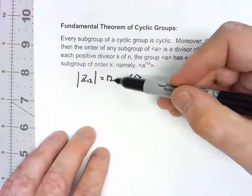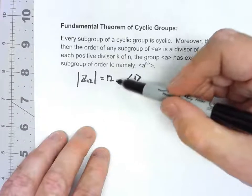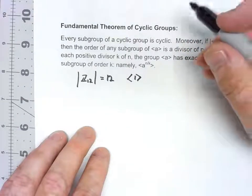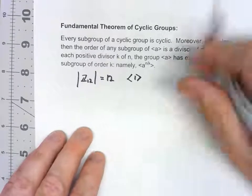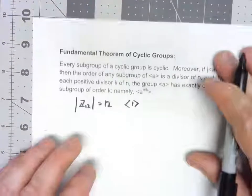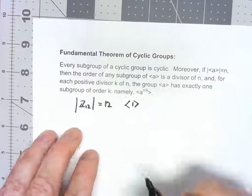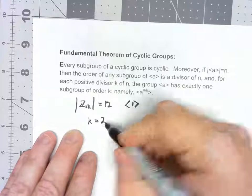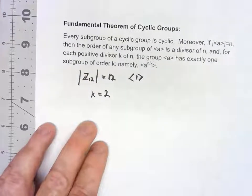So what that says is that for every divisor of 12, say for example, 2. So according to this thing, we're going to say for each divisor of that, so we're going to say effectively k is equal to 2. For k equals 2, there's one subgroup of order 2.